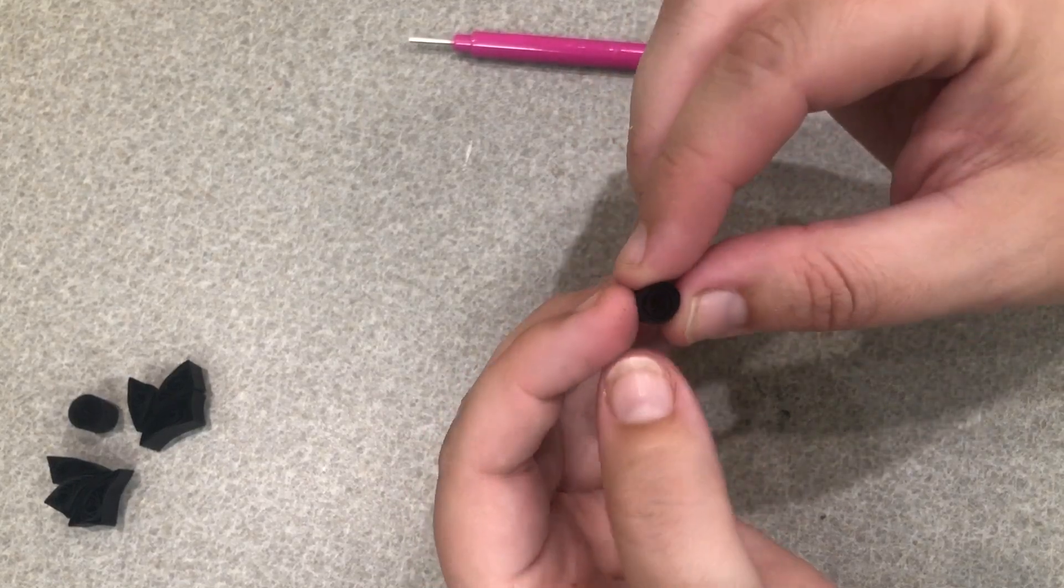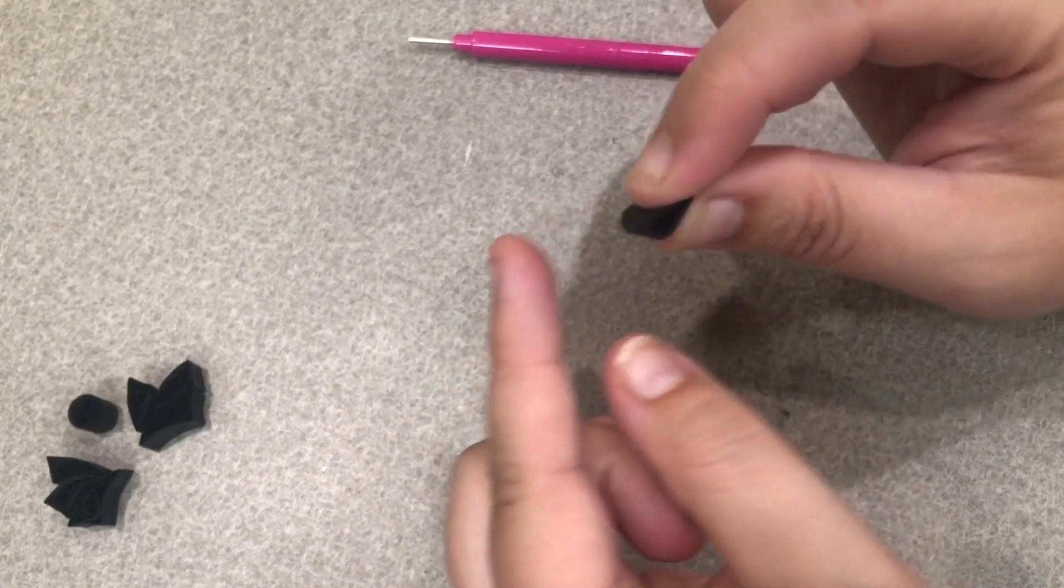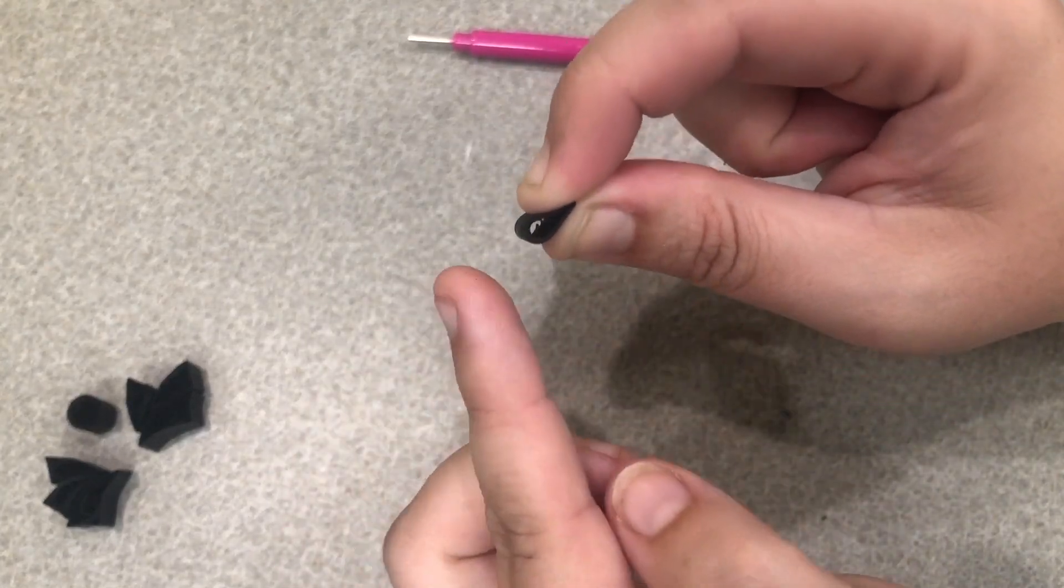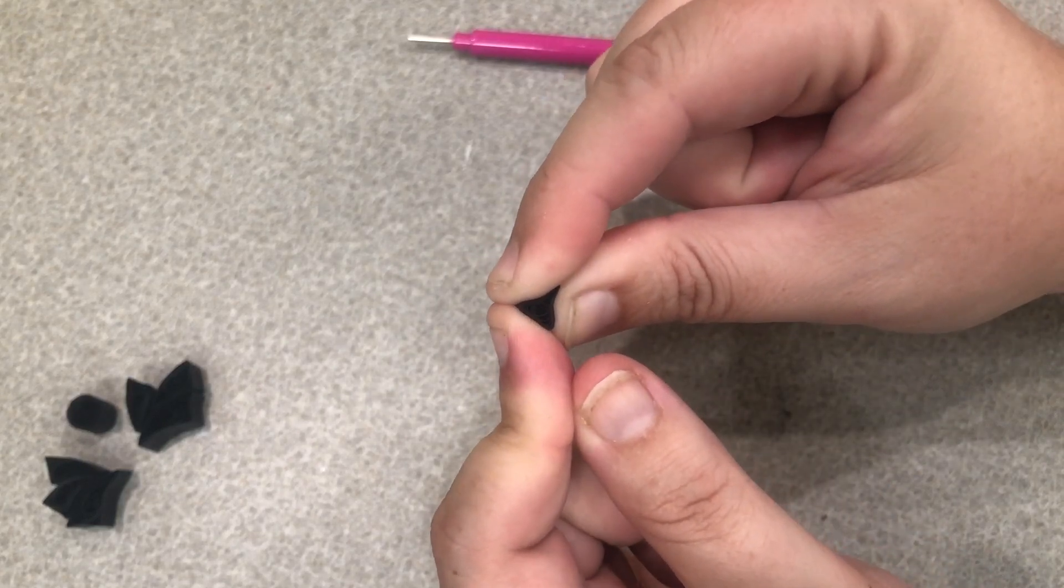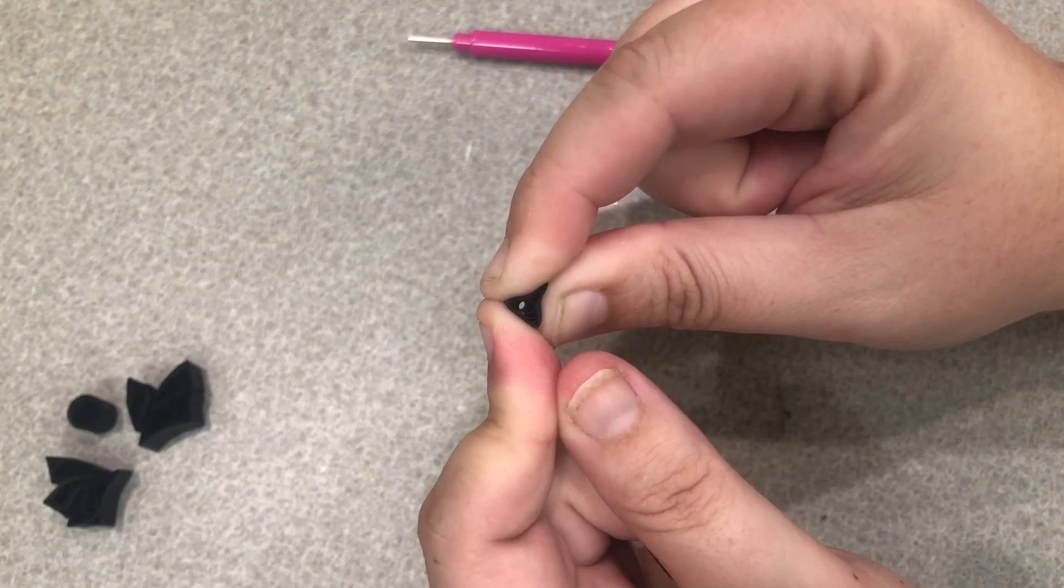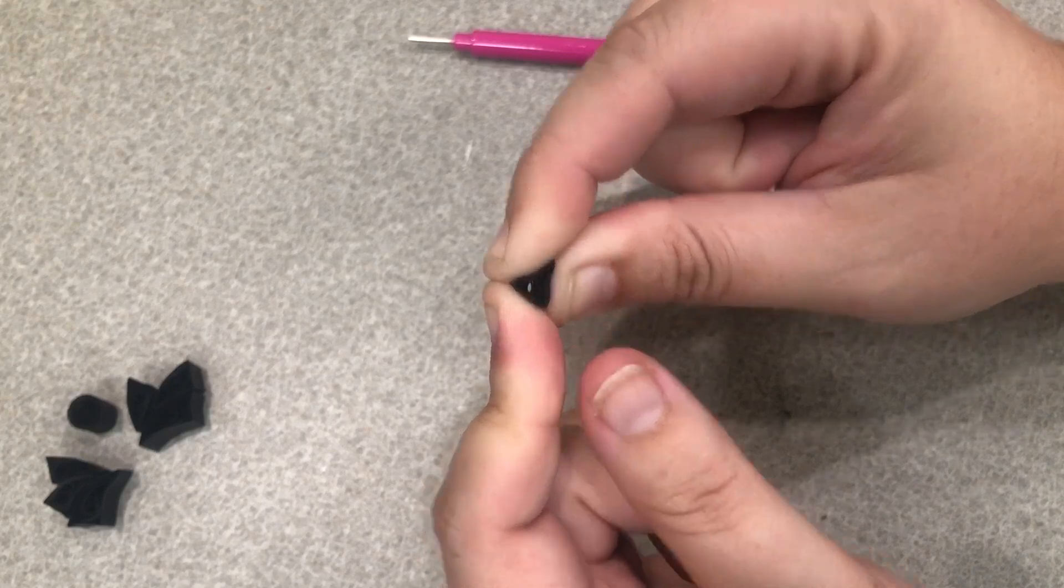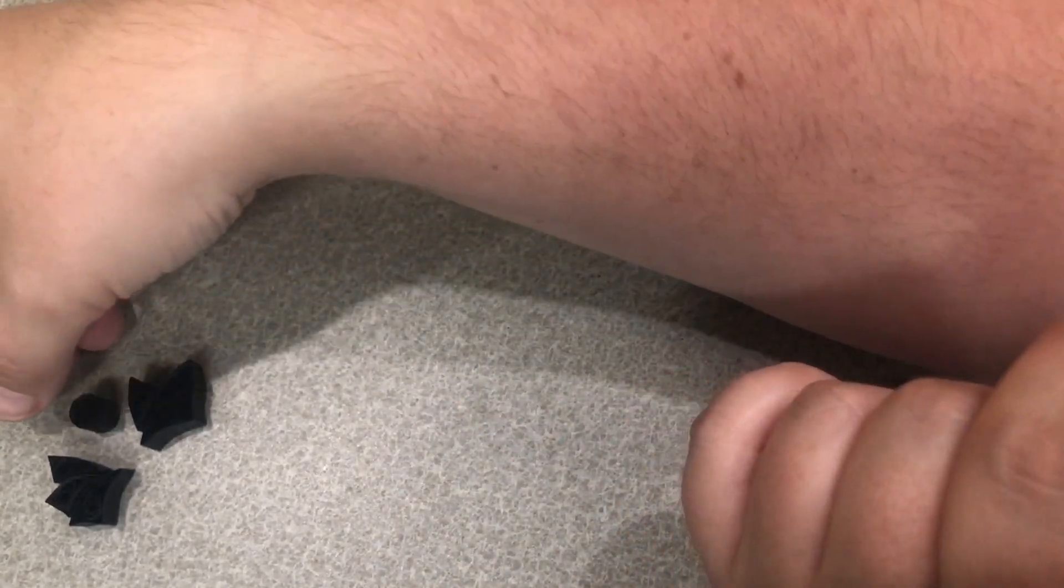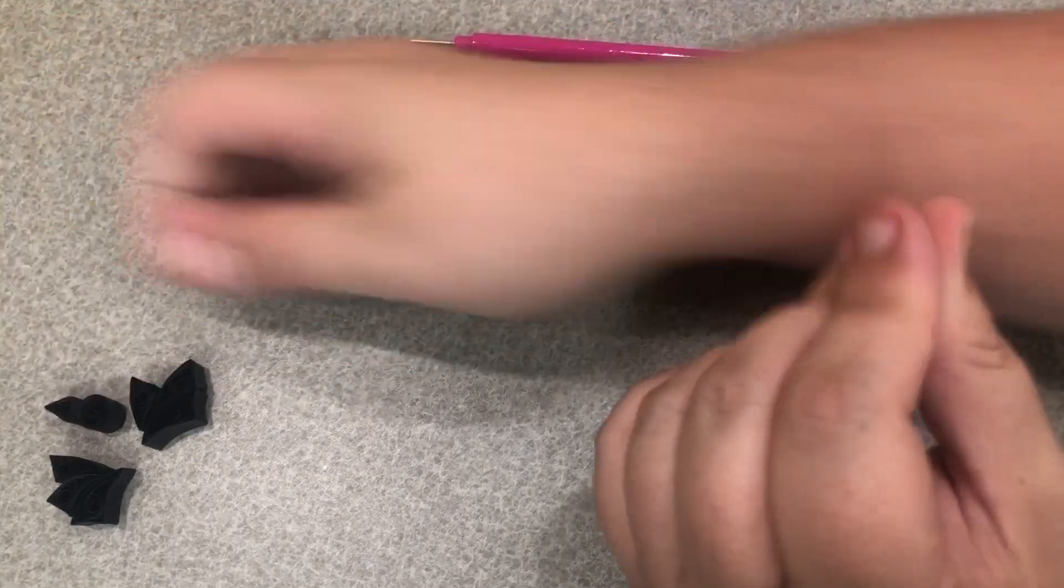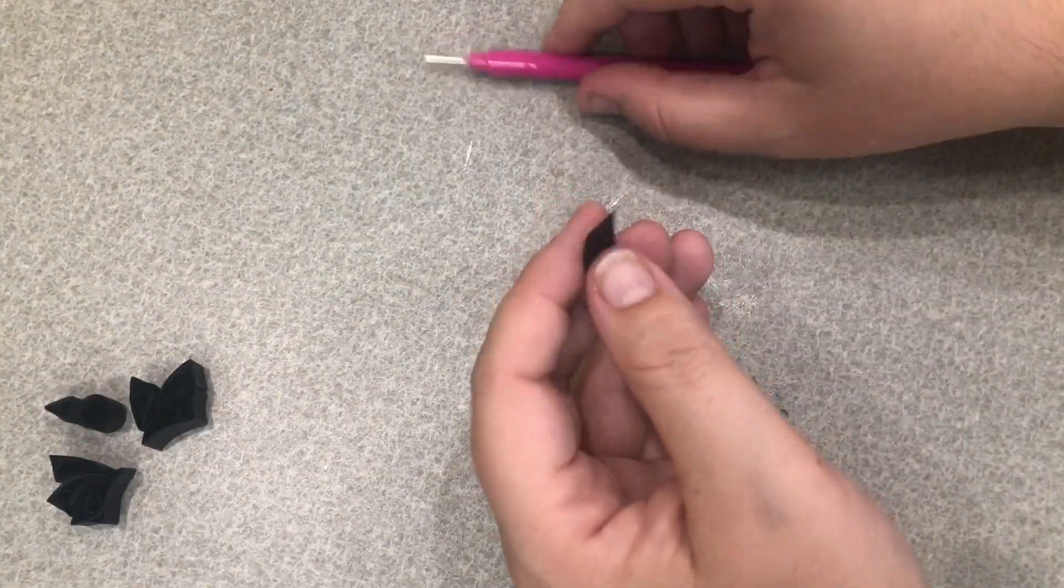And then we'll start out by pinching into a teardrop shape and then while we hold that pinched spot, take another finger and just press across the bottom rounded edge of that teardrop and it will give us a little triangle. That will be one of our bat's ears and then we'll make another one just like that.